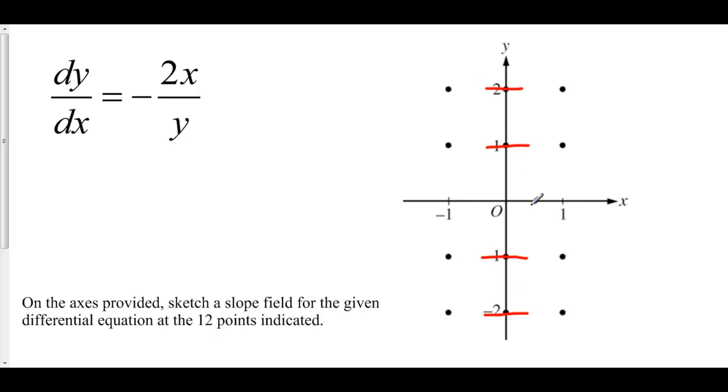Now let's take a look at these other points. Here we have (1, 1). If you plug (1, 1) in we get negative 2 over 1, which is negative 2. A line with slope negative 2 looks something like that. Here we have (1, 2). If you plug 1 into x and 2 into y we get negative 1, and a line with slope negative 1 is something like that.